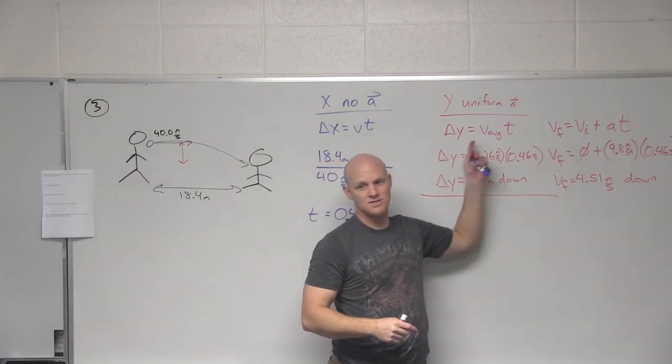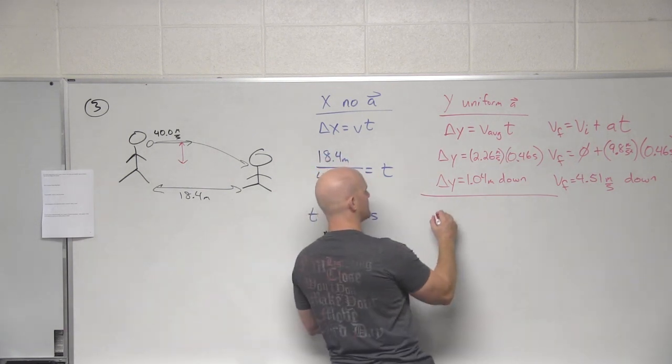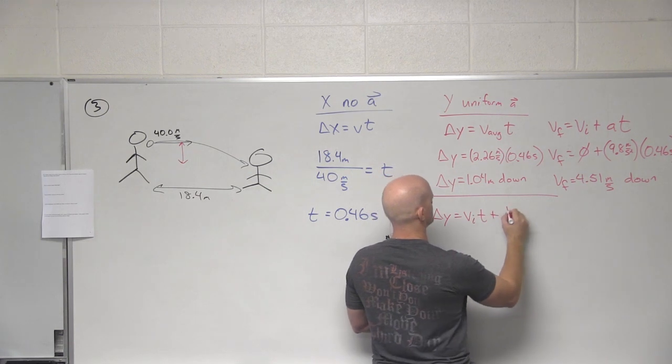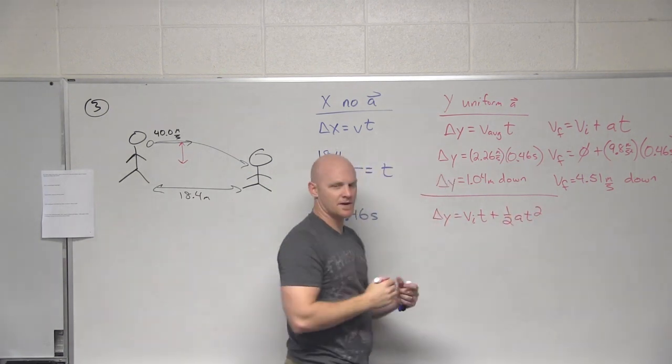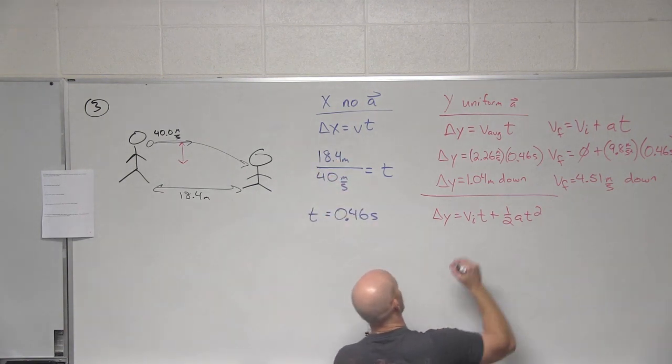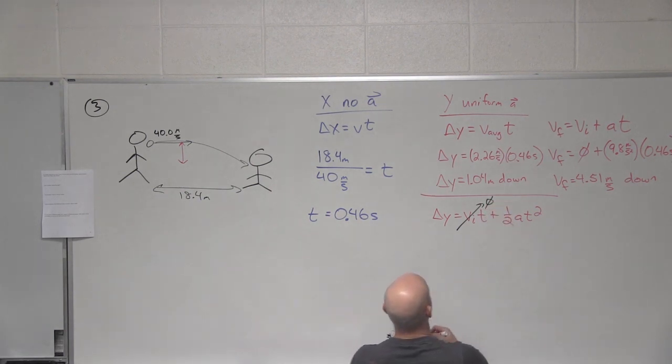we used two sets of equations here. There might have been an easier way to calculate this. What's the other way we might have gone about this? Yeah. So in this case, why is this equation pretty convenient in this example? Yeah. v initial is 0. That term goes away. And so all we're left with